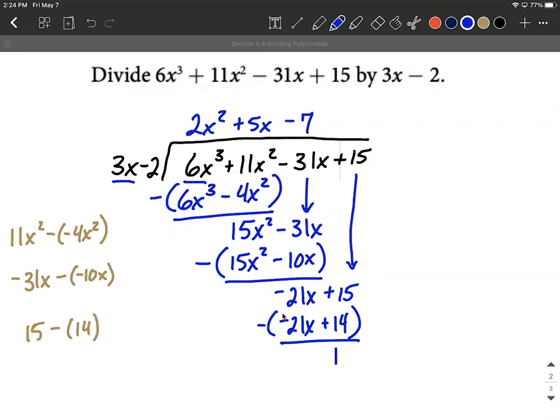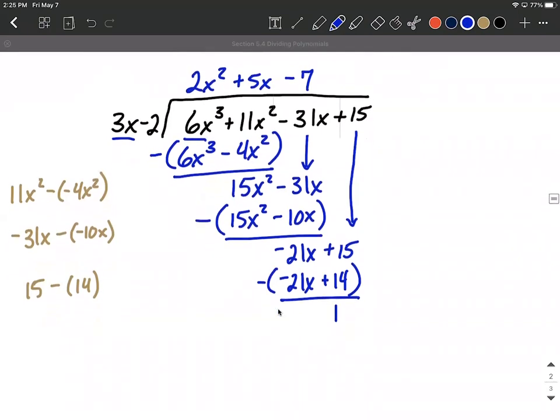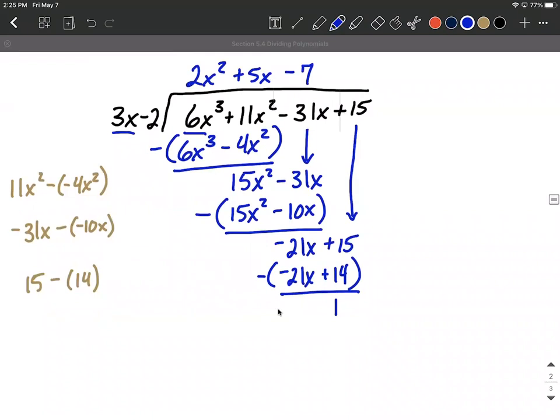All right now that we've completely done our long division we can't go any further. Let's write our solution as the quotient 2x squared plus 5x minus 7 plus the divisor. Oh sorry the remainder over the divisor. So just copy down our quotient from up top plus the remainder the 1 from here at the bottom over the divisor the 3x minus 2.